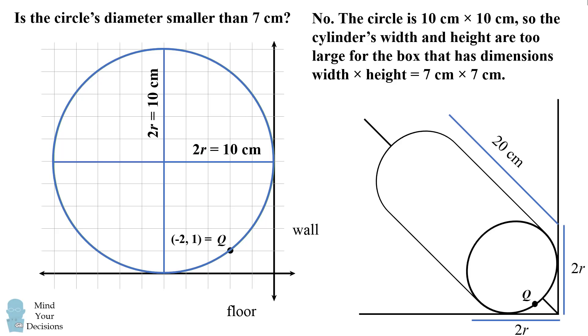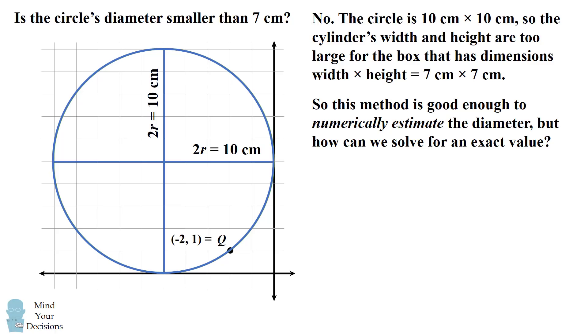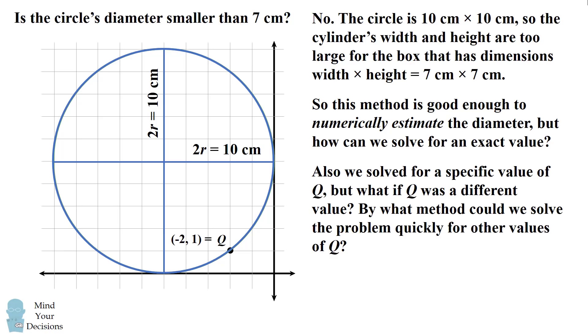But for a mathematician, this may be unsatisfying. While we have found a method to numerically estimate the diameter, how can we solve for the exact value? Furthermore, we solved for a specific value of q. But what if q was a different value? By what method could we solve the problem quickly for other values of q? It wouldn't be convenient to keep on trying to do this simulation for every single value of q. But we might be able to come up with a formula so that we can instantly figure out what the dimensions of the circle would be for any value of q. So how can we approach the problem and solve this more generally?